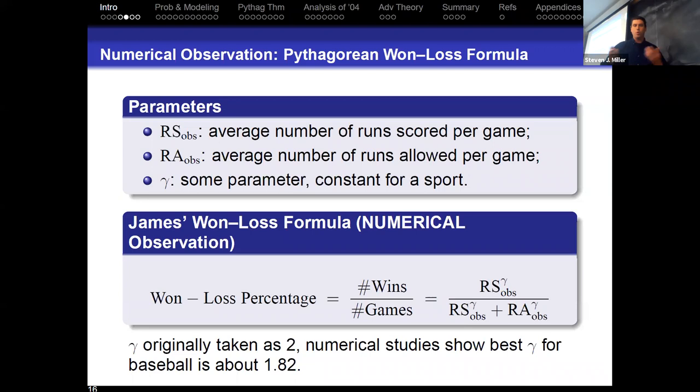So, as an example, in 2009, the Sox went 95 and 67, scored 872 runs, allowed 736, for prediction of 93.4. So that's pretty good, right? Are you convinced? Why aren't you convinced? It's really good. It's more than just that it's one data point. So this is a really important moment in your education. It's a really good data point, right? 95, 93.4, that's pretty close. Why aren't you convinced? It's more than just one data point.